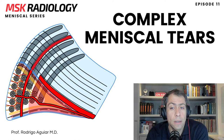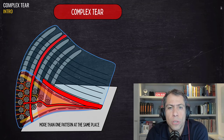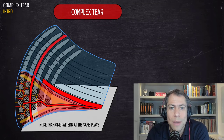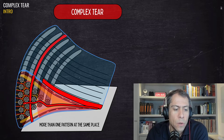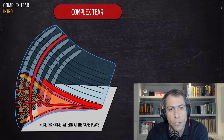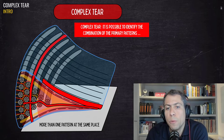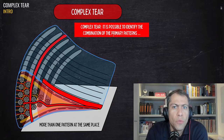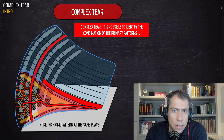In this video let's talk about another type of meniscal tear: the complex meniscal tear. The complex meniscal tear is a combination of different patterns of meniscal tears at the same meniscal region. For example, in this picture we can see three different patterns at the same meniscal region: horizontal type, vertical longitudinal type, and a partial radial type. In complex tears, it's possible to identify the combination of different primary patterns of meniscal tears.